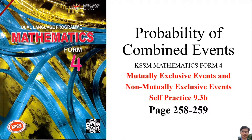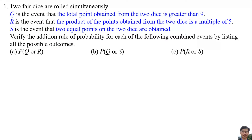Probability of Combined Events — Mutually Exclusive and Non-Mutually Exclusive Events. Self Practice 9.3b, Page 258-259. Version 1: Two fair dice are rolled simultaneously. Q is the event that the total points obtained from the two dice is greater than 9. R is the event that the product of the points obtained from the two dice is a multiple of 5. S is the event that the two equal points on the two dice are obtained. Verify the addition rule of probability for each combined event by listing all possible outcomes.